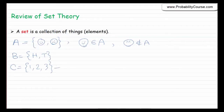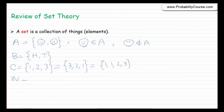For example, {1, 2, 3}. Note that the ordering does not matter, so this is the same as {3, 2, 1} — these are the same sets. Also, repetition is not allowed, so if I write {1, 1, 2, 3} it is the same set as {1, 2, 3}. If I want to have two different elements, we have to distinguish them somehow. There are some important sets, such as the set of natural numbers {1, 2, 3, ...} and the set of integers.